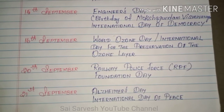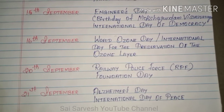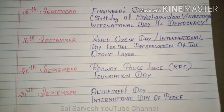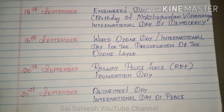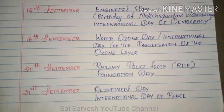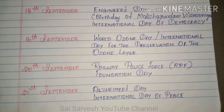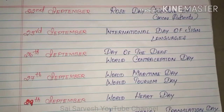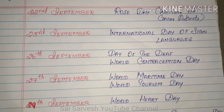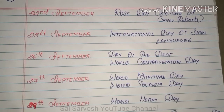20th September: Railway Police Force (RPF) Foundation Day. 21st September: Alzheimer's Day and International Day of Peace. 22nd September: Rose Day — Welfare of Cancer Patients.